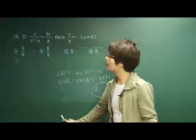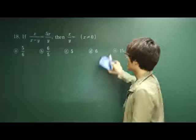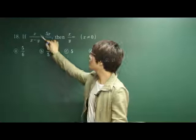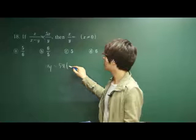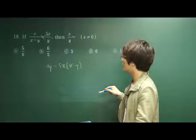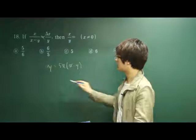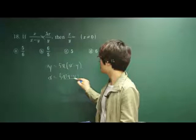Okay, let's move on. Number 18. If x over x minus y is equal to 5x over y, then x over y is. How do we solve this question? As you know, cross multiplication, xy is equal to 5x times x minus y. Divide each side by, let's say, y.